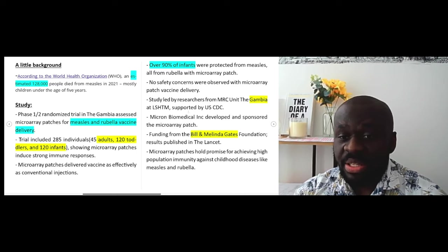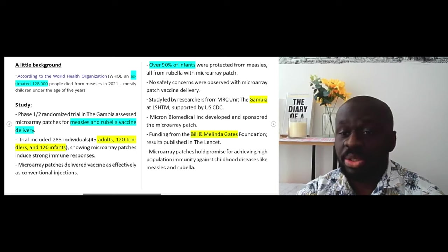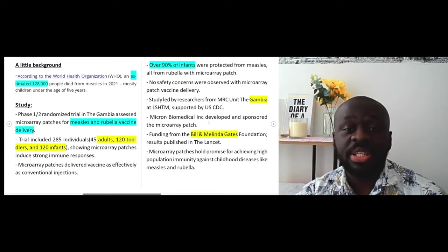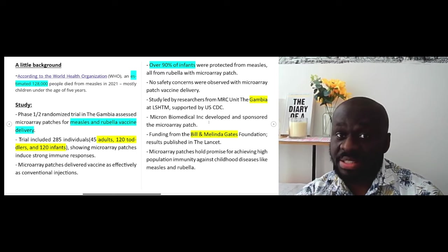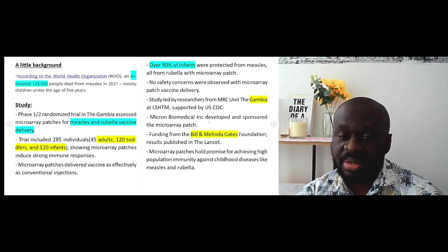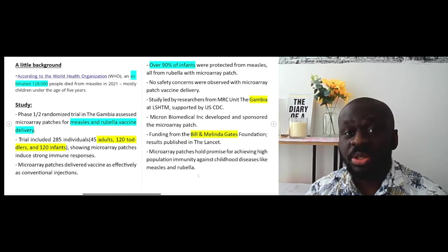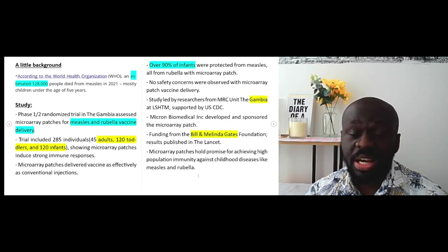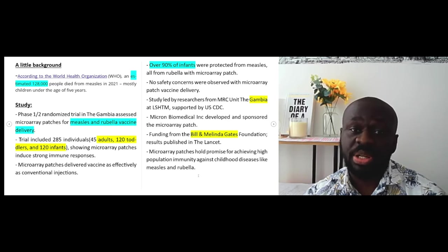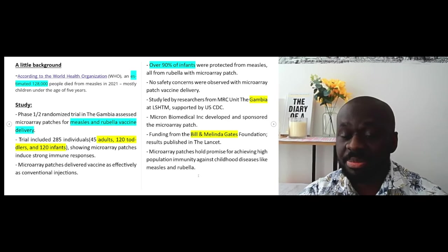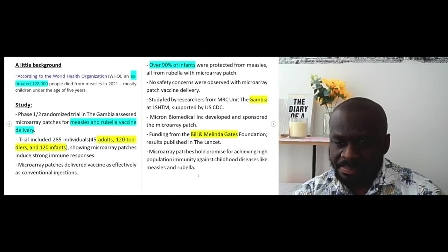So it was conducted in the Gambia, as I said earlier, and the Micron Biomedical were the ones who actually sponsored this research. But the funding was from Bill and Melinda Gates Foundation. So Bill Gates is very much involved in vaccines, vaccine development and a lot of health research globally and especially in Africa. You can see this was carried out in the Gambia. So obviously this technology or this mode of delivery of vaccines holds a lot of promise for achieving a high population immunity against childhood disease like measles and rubella. Rubella previously used to be called German measles, but I think it's now called rubella because that's probably not an acceptable term to describe it. It's pretty promising.